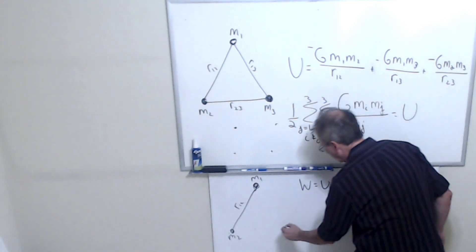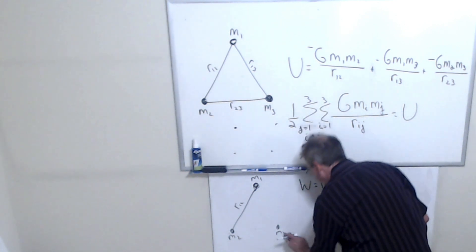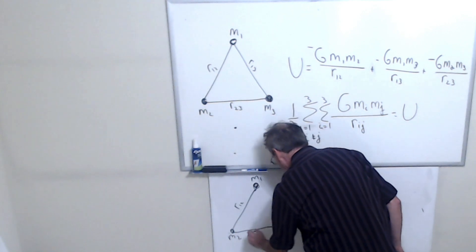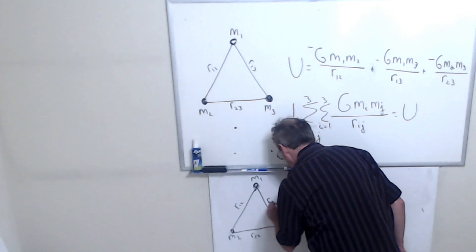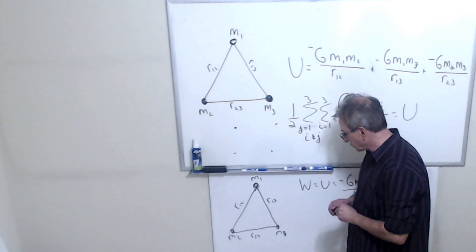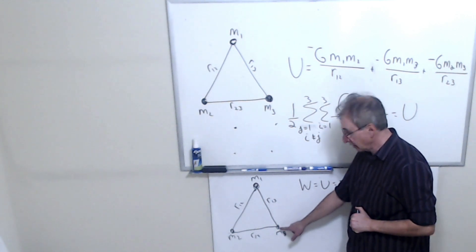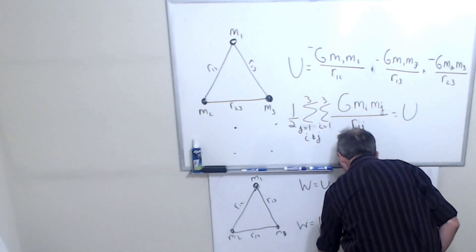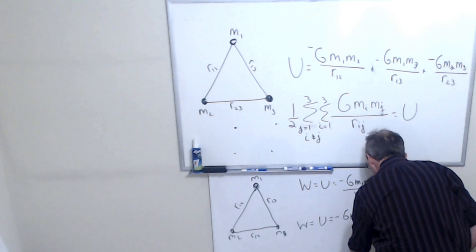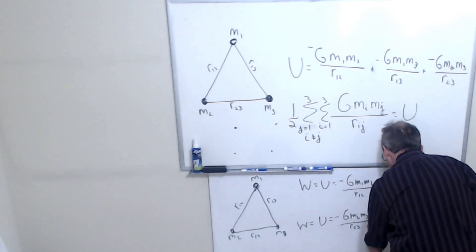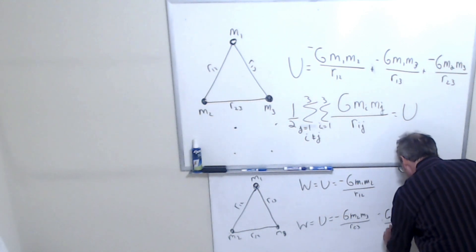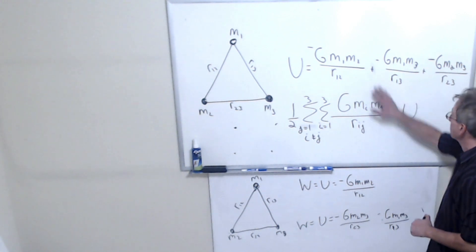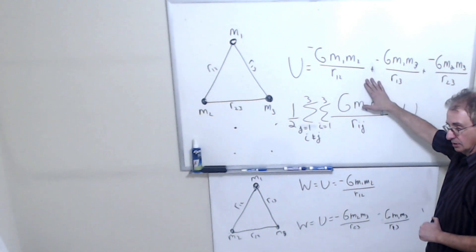I take the third particle and bring it here. I want to make sure you can see the video. Well, now I've got to consider how much work it takes to put this object here. And that basically is the potential energy that this thing has. The total work that's required to assemble this is the sum of these three terms, which gives you this. And so that's the energy stored in the system.